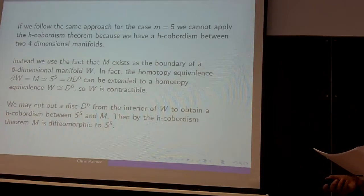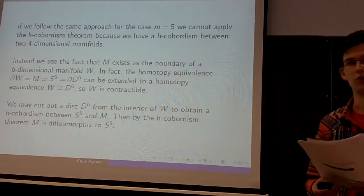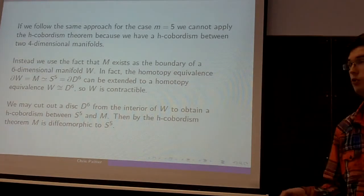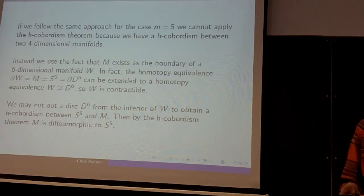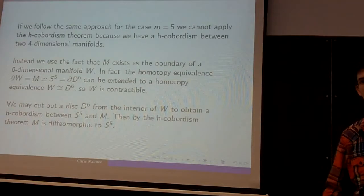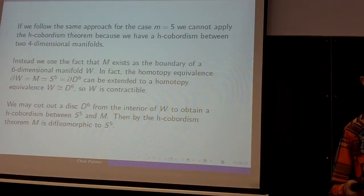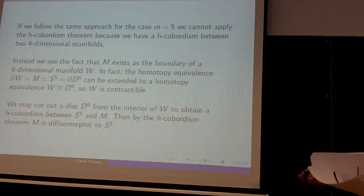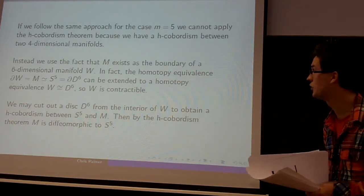So the case m equals 5, there is a slight problem. We could try to use the same approach, so remove two five-dimensional discs, but then the boundary components of these are four-dimensional, and to apply the H-cobordism theorem, everything needs to be at least five-dimensional. So we use a neat trick.